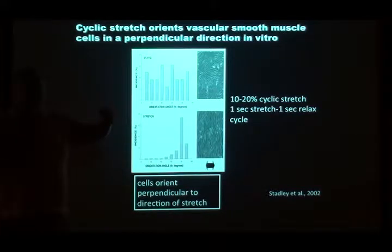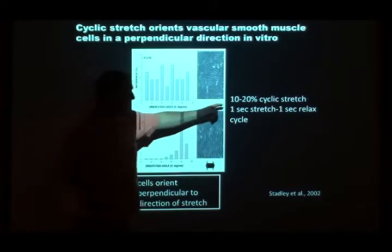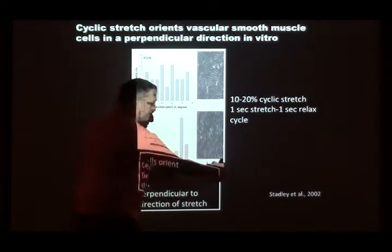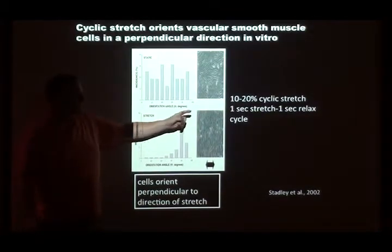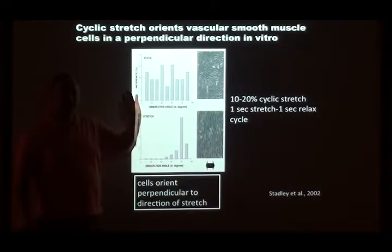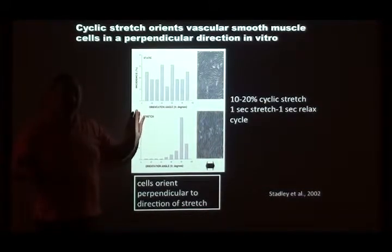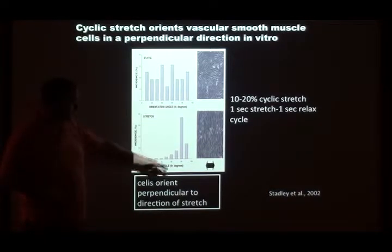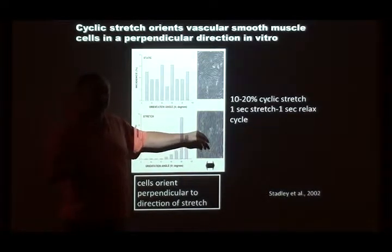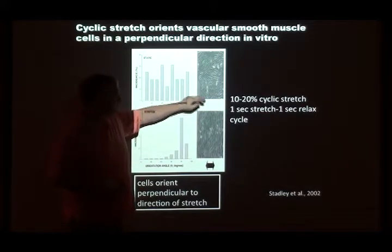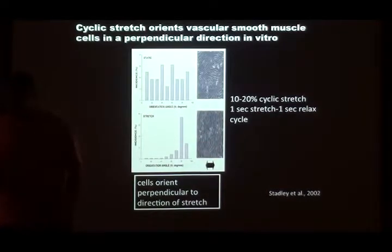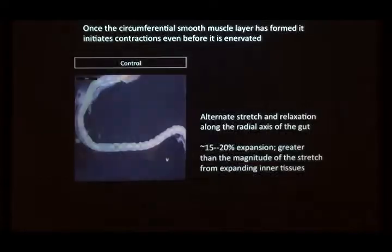If instead of just stretching the tissue you stretch it cyclically — for example a 20% stretch for one second then relax — and you're stretching in one orientation, if you do it cyclically, instead of aligning along the stretch the cells align perpendicularly. There are lots of examples of this in the literature with vascular smooth muscle: if you apply a cyclic stretch, instead of being random or parallel, they align perpendicular to the stretch direction.